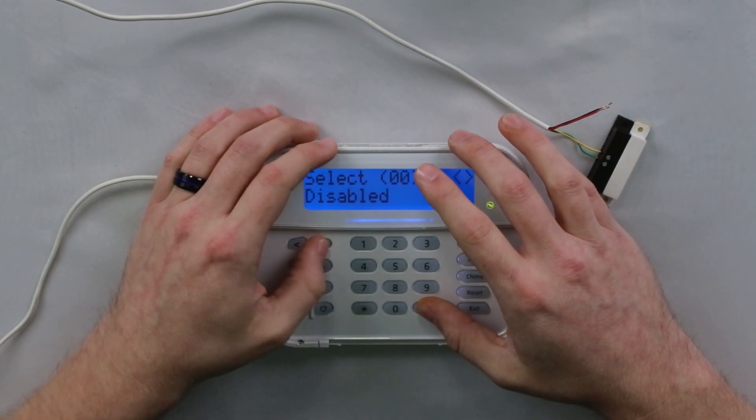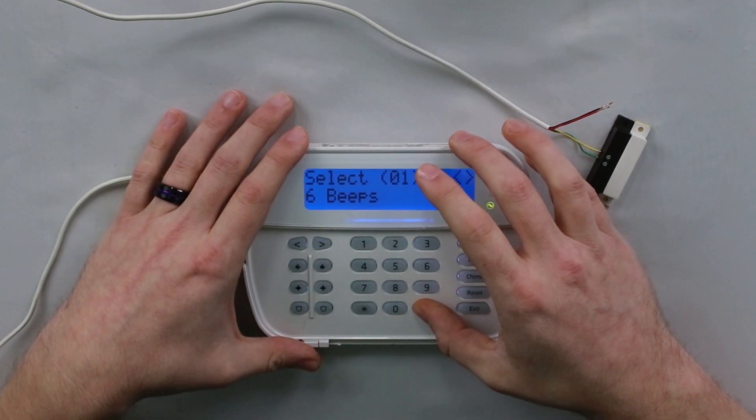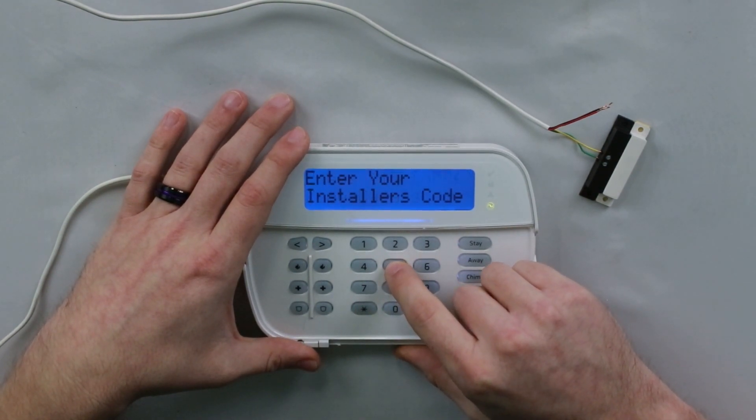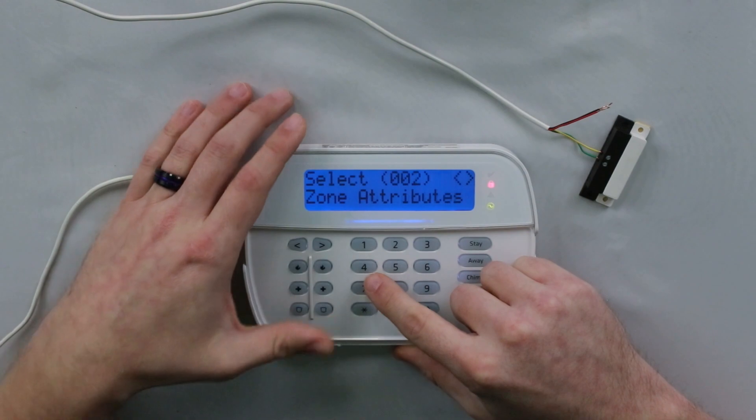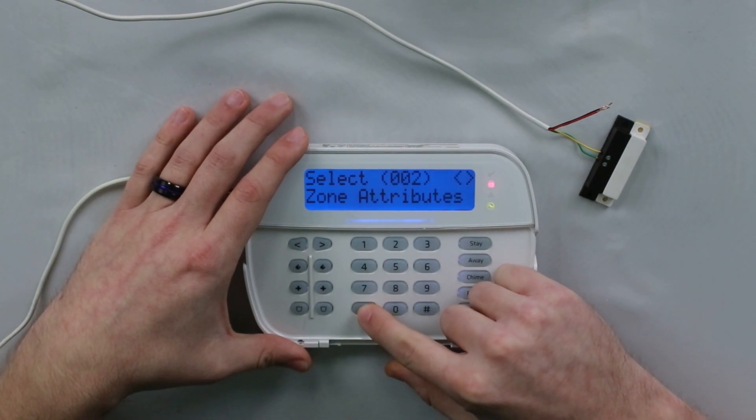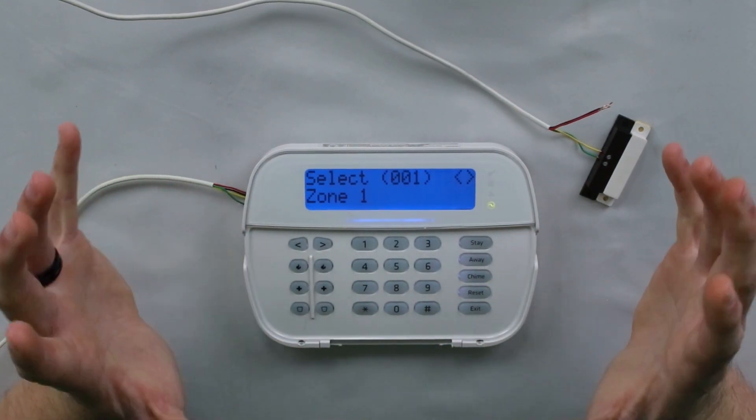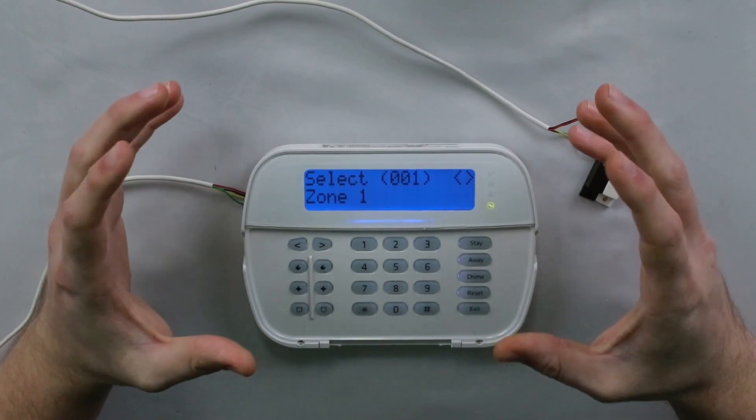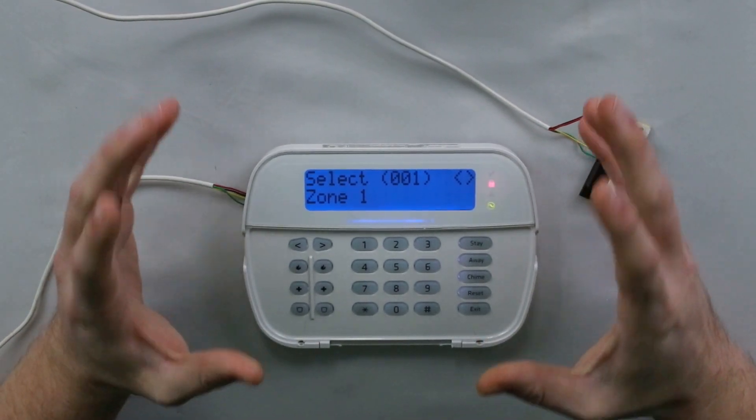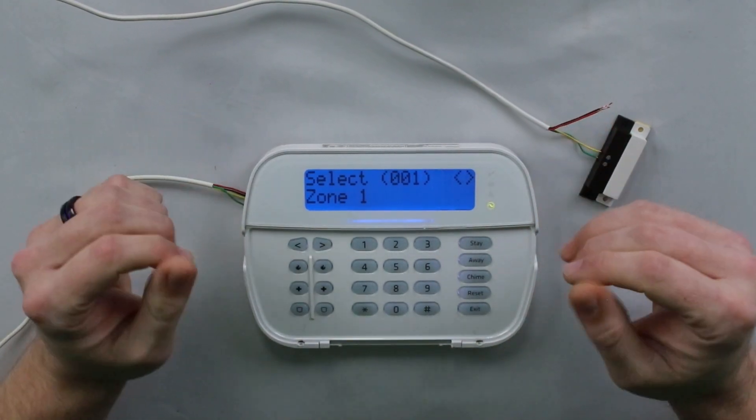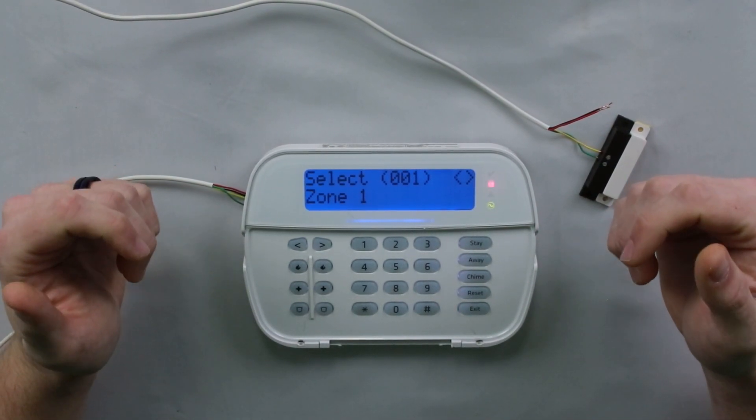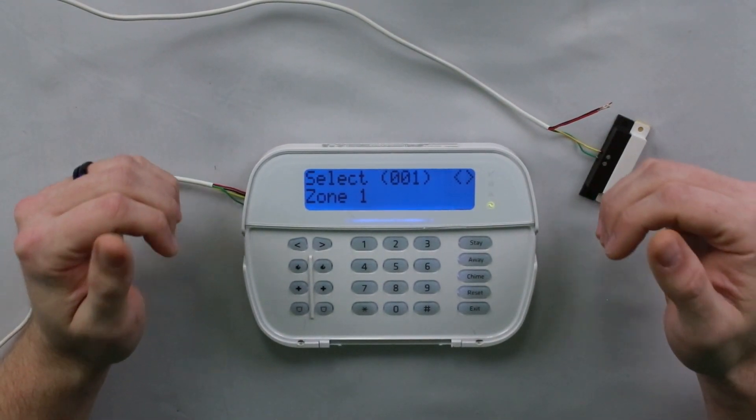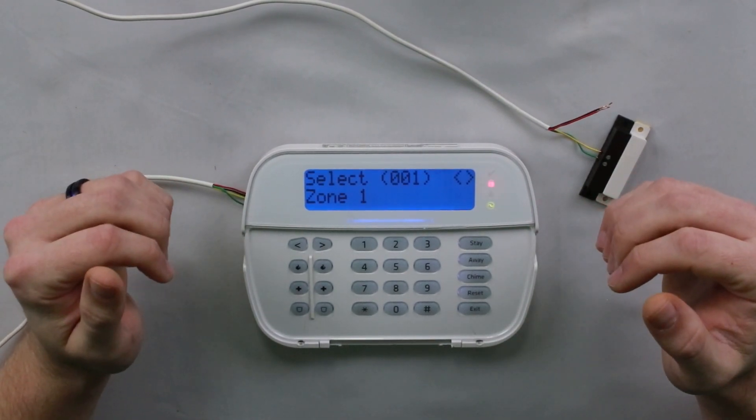There is one other section where you can actually enable and disable chime for the zone. I'm going to show section 002, which is zone attributes. One thing to keep in mind about zone attributes, you do not want to change any of the default settings except for chime. If you go in here, a lot of these attributes control how the zone functions. If you mess up those functions, then your zone might not work properly. So if you decide to come into section 002 for zone attributes, make sure you're only changing the chime.